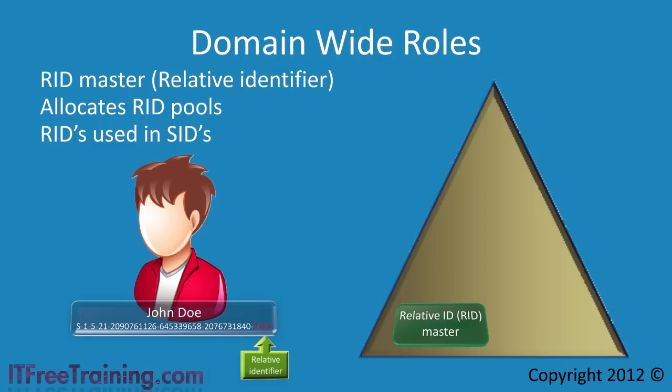Every user account will have a SID and also a user name associated with it. The user name is used by us humans as it is easy for us to remember, while the SID is used by Windows as computers work better with numbers. Since Active Directory user accounts primarily work against a SID, this is why you can easily change a user name and not have to change any of the permissions associated to that user. Any file that has permissions assigned to that user will be referenced back to that SID. When a user name changes, Windows will simply display the new user name that is associated with that SID.